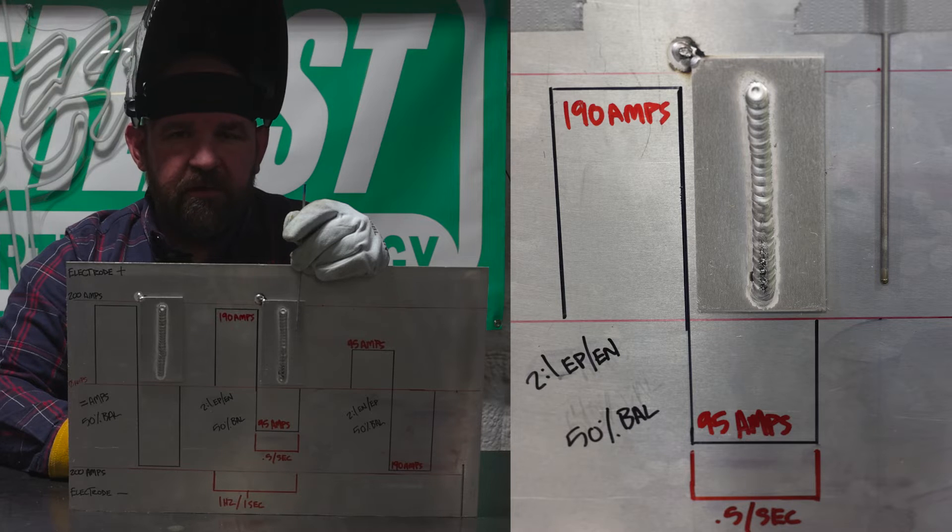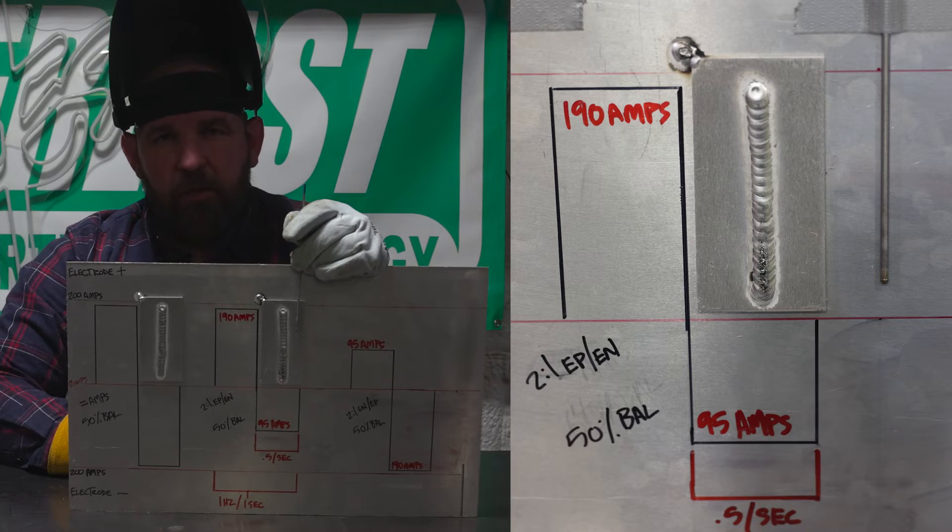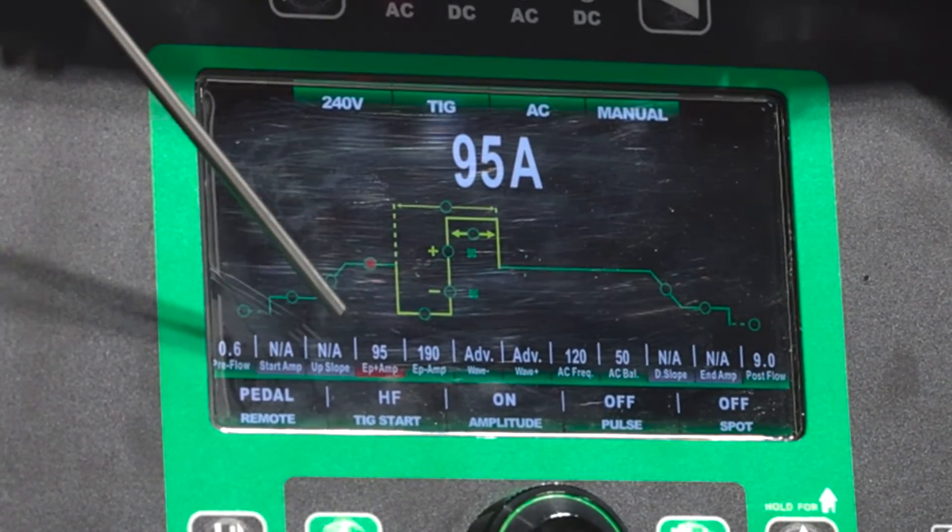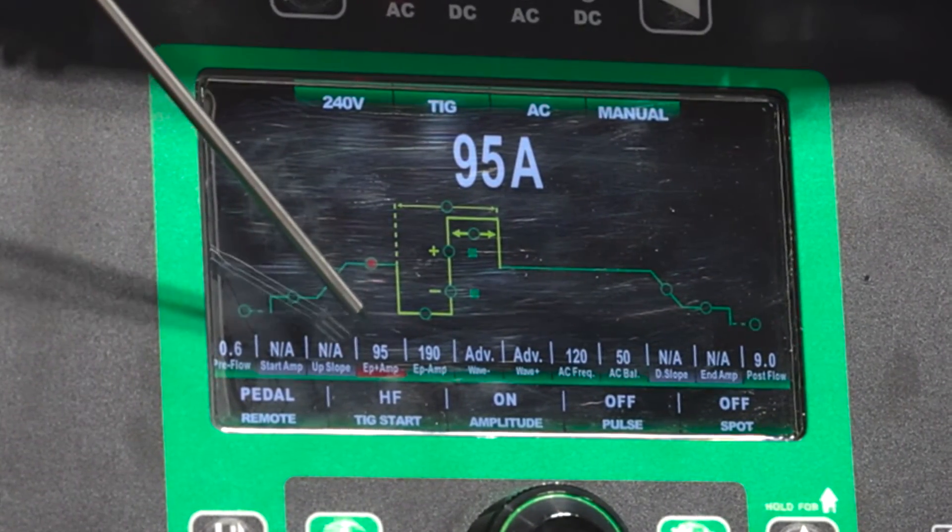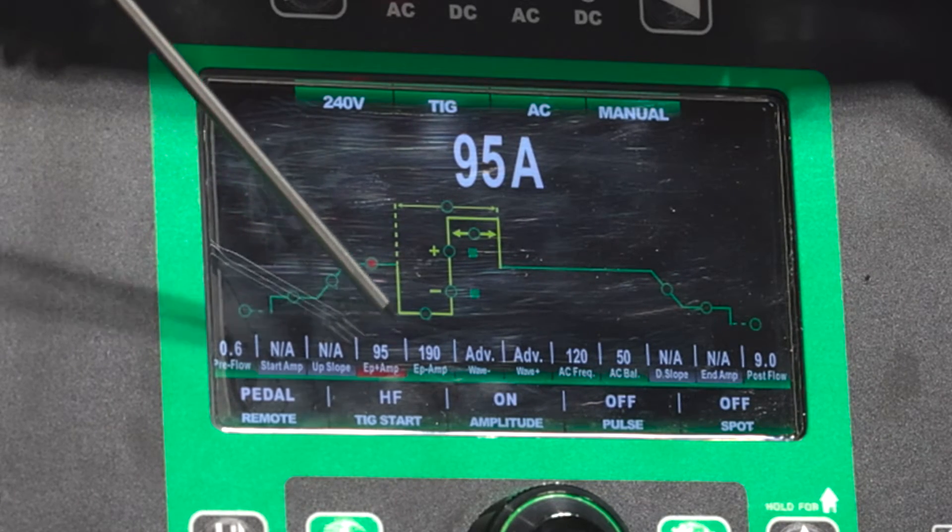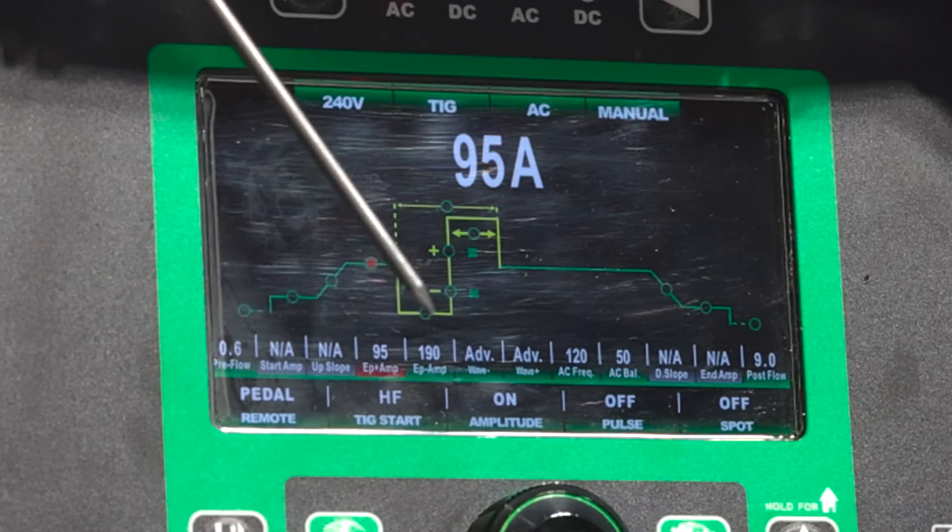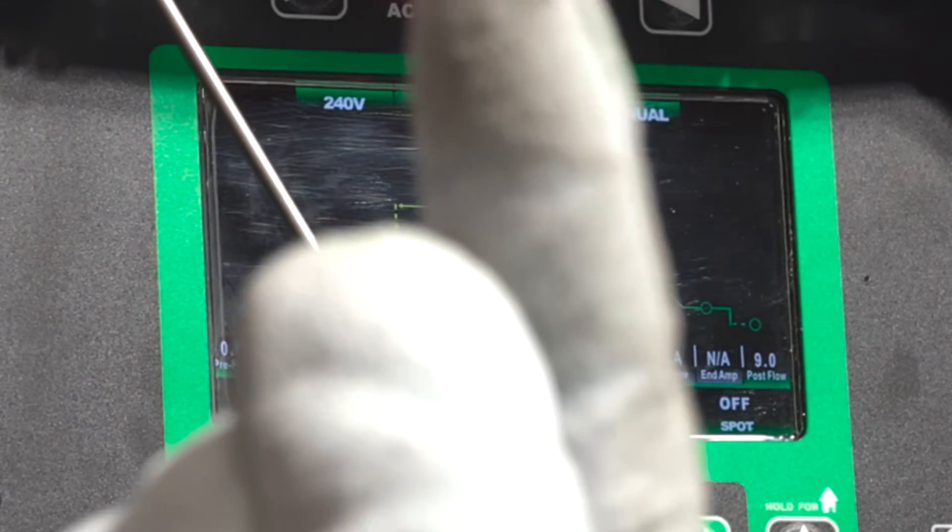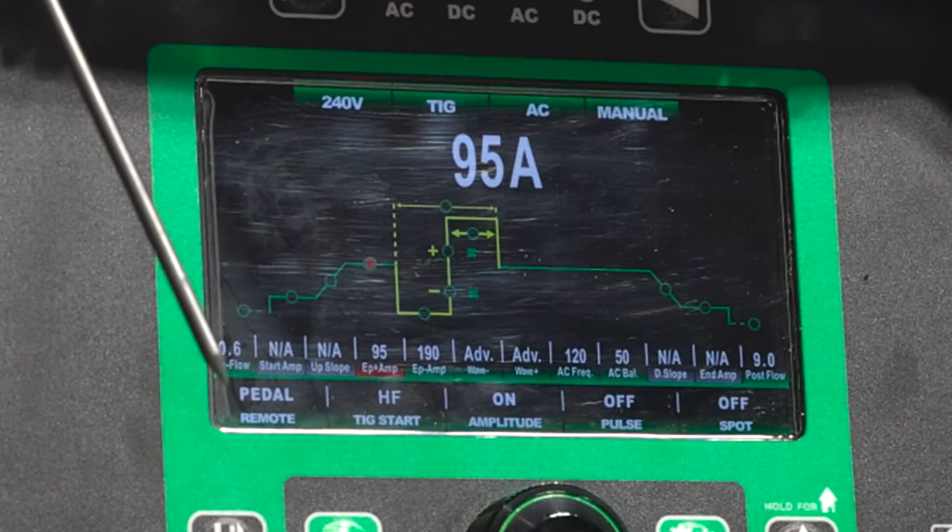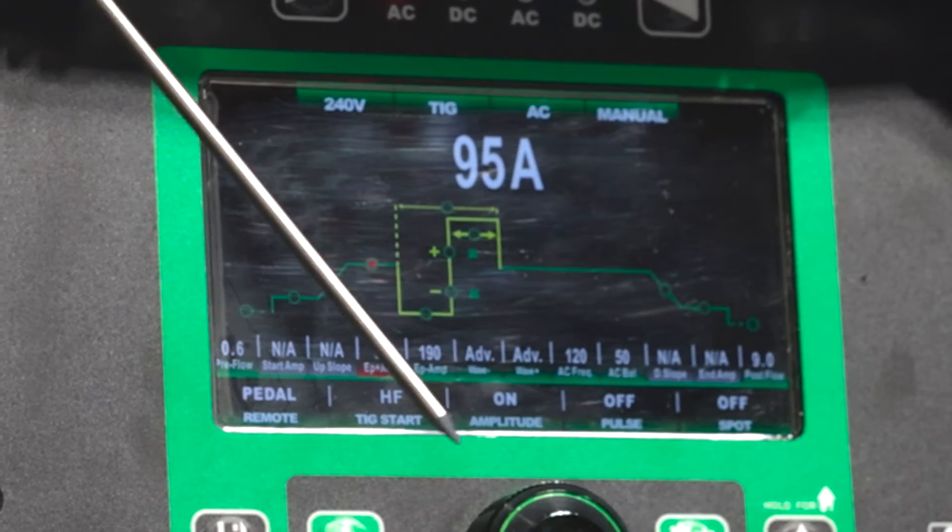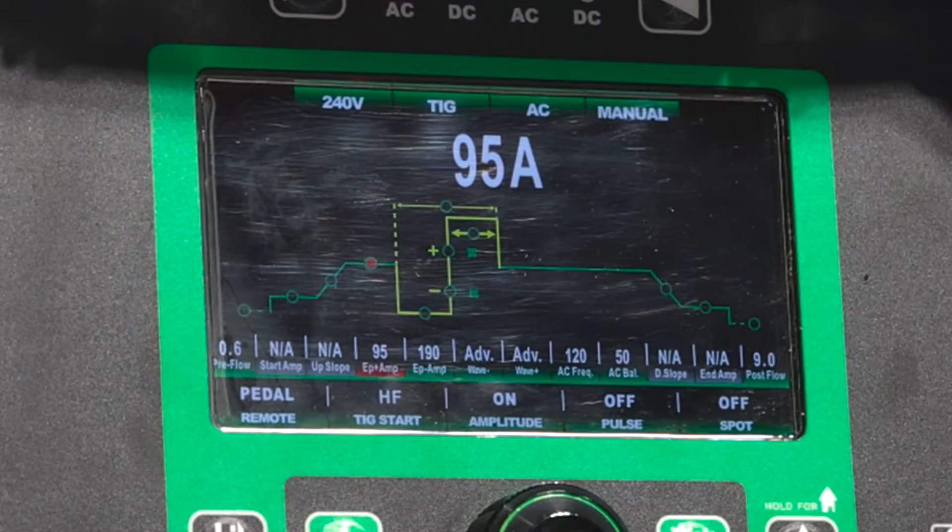We're back at the machine. I've already inversed our settings. We are now running 95 amps electrode positive and 190 amps on our electrode negative. So we're going to be sending 95 amps up to our tungsten and 190 amps down to our weldment at full pedal. Let's put in a fresh piece of tungsten, make our third run, and we'll go over the results at the end.